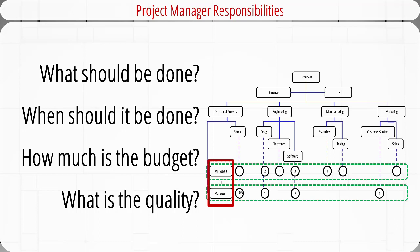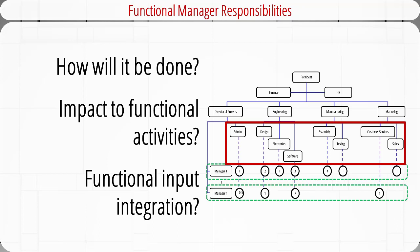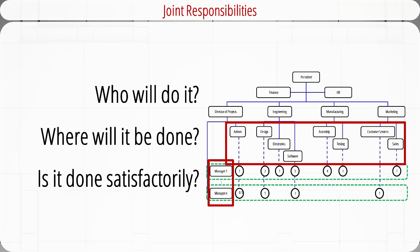In a matrix structure, project managers and functional managers have different responsibilities. A project manager's responsibilities include determining what has to be done, when tasks should be completed, how much money is available, and how well tasks should be done. A functional manager decides how a task will be done technically, how project involvement will impact normal functional activities, and how well functional input will be integrated. It is the joint responsibility of both managers to negotiate who exactly will be assigned to a task, where it will be conducted, and whether it is satisfactorily completed.